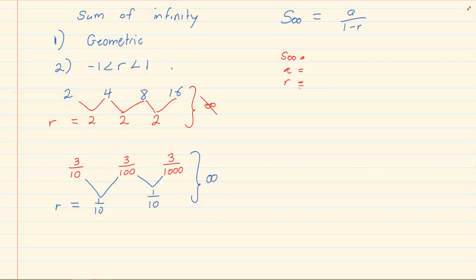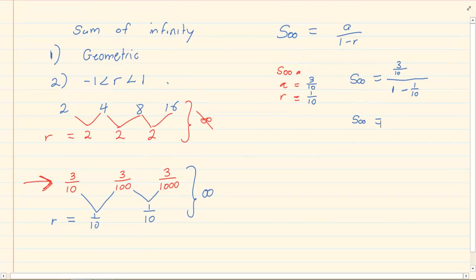And if they give you sum of infinity and r, basically substitution and solve. Now let's calculate the sum of infinity for the following number pattern: 3 over 10, 3 over 100, 3 over 1000. The a is 3 over 10, the r is 1 over 10. So by substitution, we have s of infinity is going to equal 3 over 10 all over 1 minus 1 over 10. So the s of infinity is equal to 1 over 3.